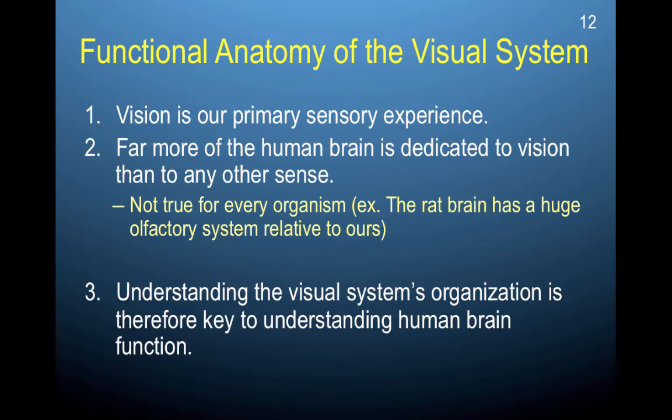The rat brain, for example, has a huge olfactory system relative to ours. So animals, even if they do have a high level of visual acuity, they'll oftentimes have variable balances across their sensory systems. So as humans, we are highly reliant on vision, where a rat, for example, could be reliant both on vision and smell. Dogs, for example, can be reliant on both hearing and smell. So they have an over-representation of those in the brain. But for humans, understanding the visual system's organization is really key to understanding human function, human brain function. Because we're so reliant on the visual system, it is particularly important to understand how we process visual information.